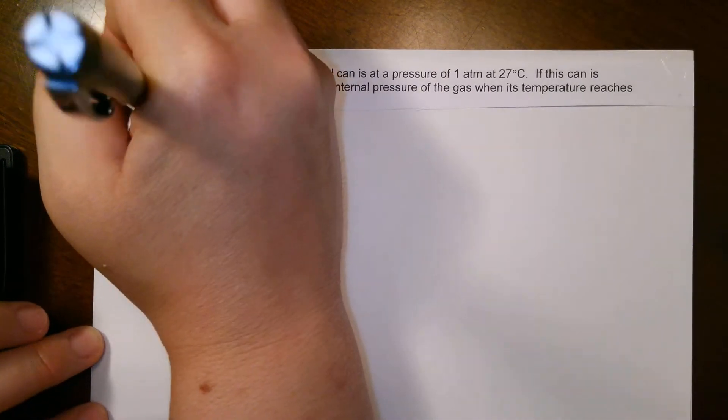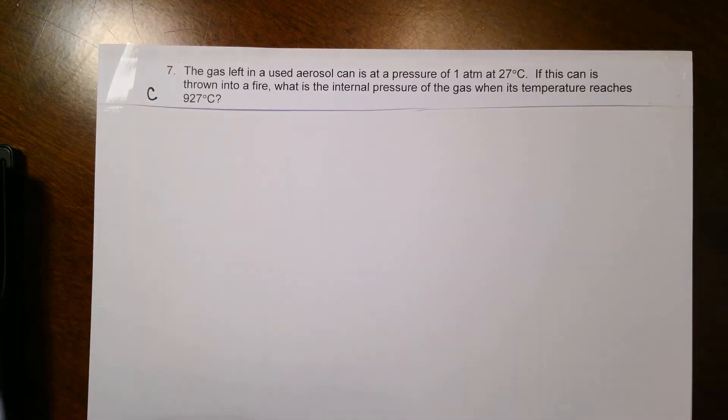Here's question 7 from section C with the combined gas law. Gas left in a used aerosol can is at a pressure of 1 atm at 27 degrees Celsius. If this can is thrown into a fire, what is the internal pressure of the gas when its temperature reaches 927 degrees Celsius?